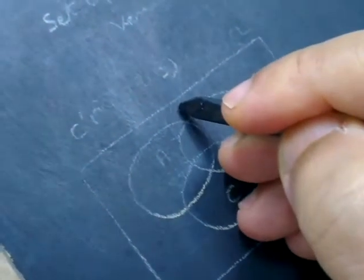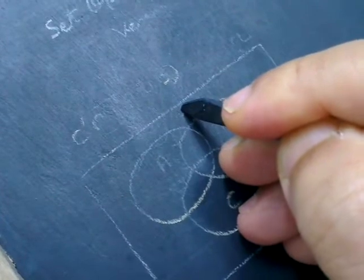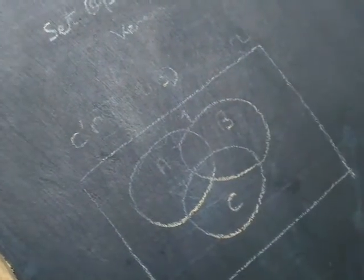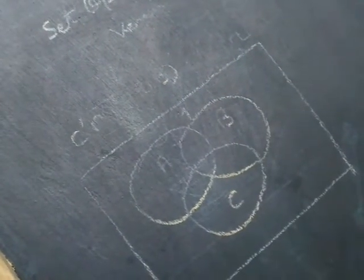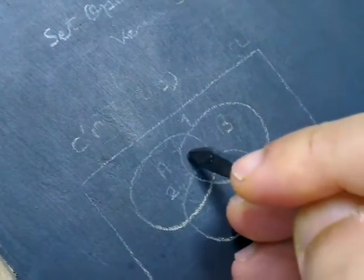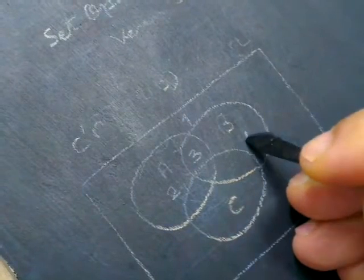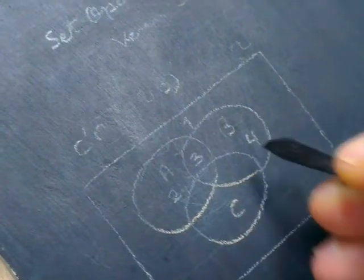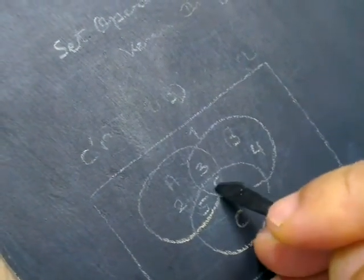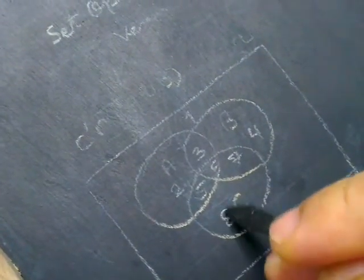First, you name the regions — you label the regions by numbers: region 1, region 2, region 3, region 4, region 5, region 6, region 7, region 8.